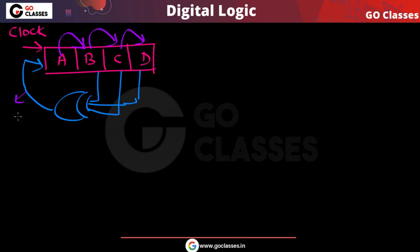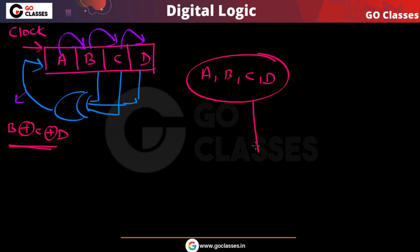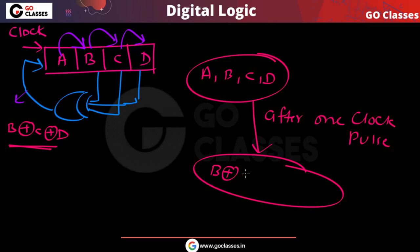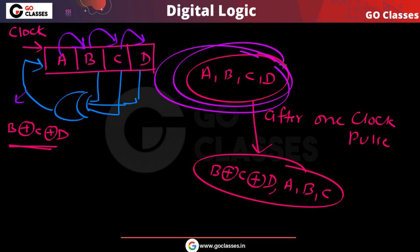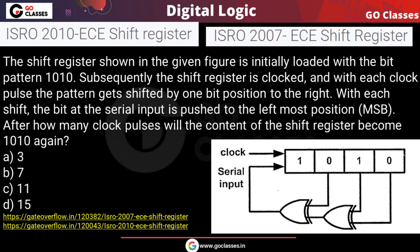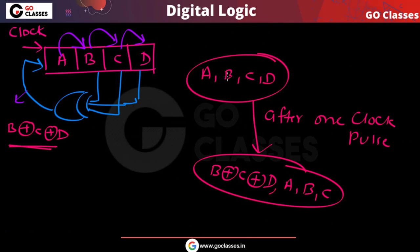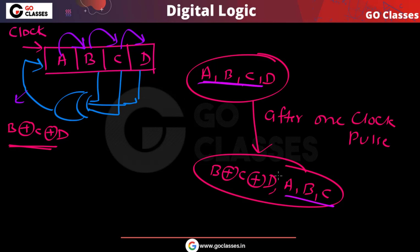The data being inserted is B XOR C XOR D. So if the current register content is (A, B, C, D), then after one clock pulse the next state will be: (B XOR C XOR D), A, B, C. This is the key state transition rule we will apply.